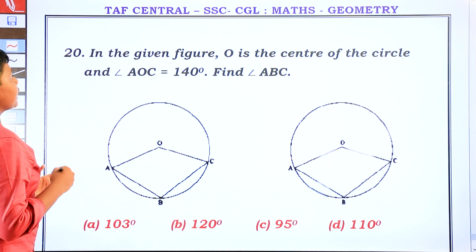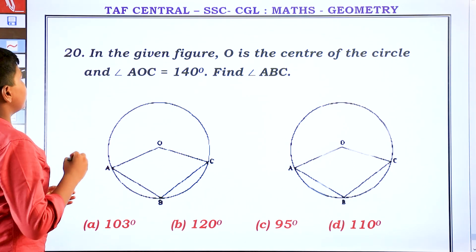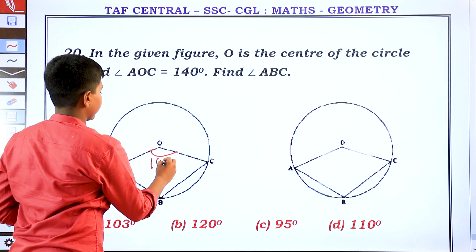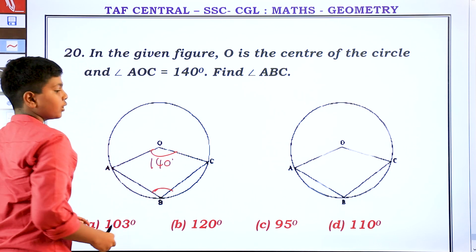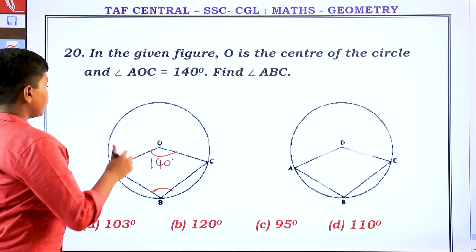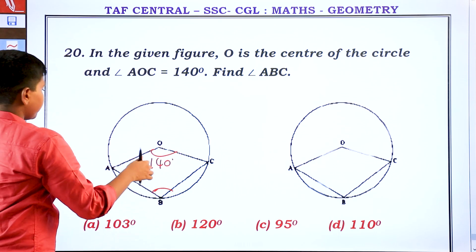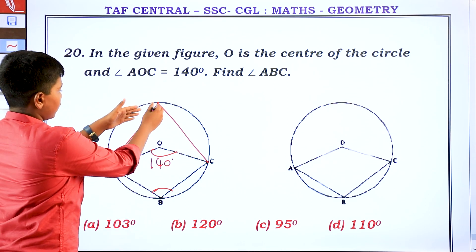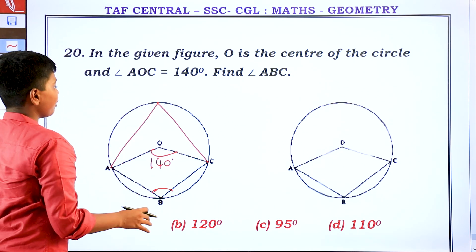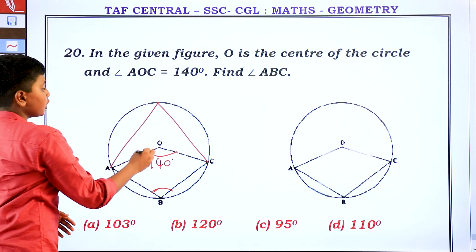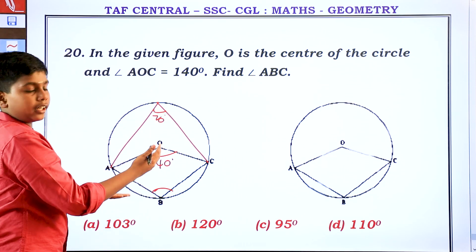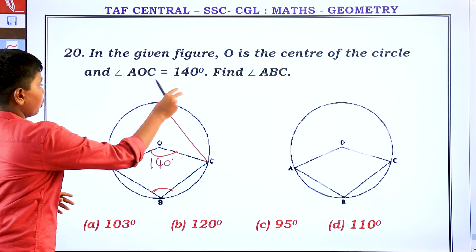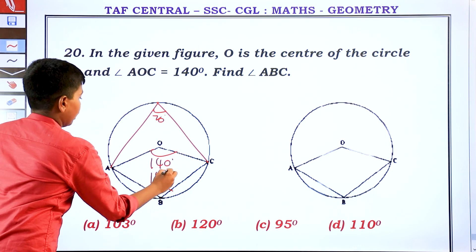In the given figure, O is the centre of the circle and angle AOC is 140 degrees. Find angle ABC. The angle AOC is 140 degrees, so the reflex angle AOC is 360 minus 140 equals 220 degrees. We form a cyclic quadrilateral. The angle at the centre for the minor arc is 140, and by the inscribed angle theorem the related angle is 70 degrees. Since the cyclic quadrilateral gives supplementary opposite angles: angle ABC equals 180 minus 70 equals 110 degrees.